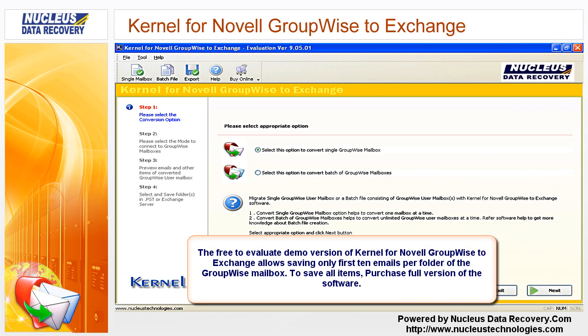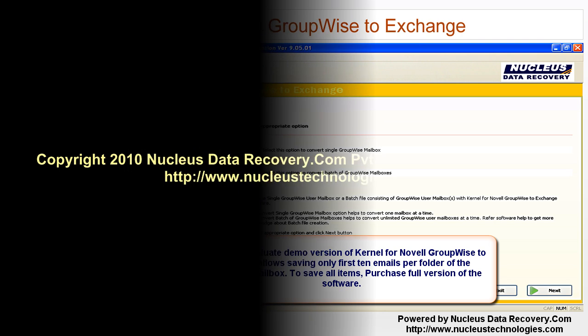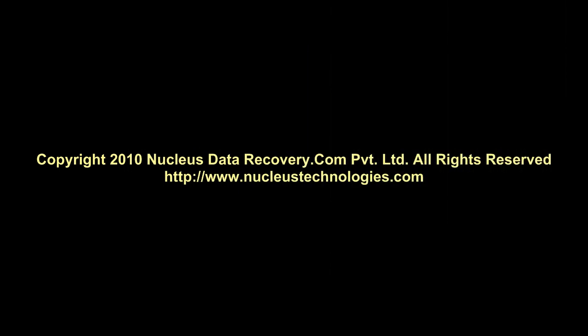The free demo version of Kernel for Novel GroupWise to Exchange allows saving only the first 10 emails per folder of the GroupWise mailbox. To save all items, purchase the full version of the software. For more information about the software, visit www.nucleostechnologies.com.